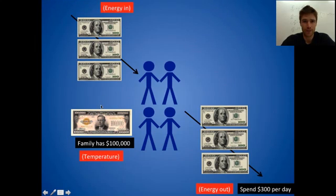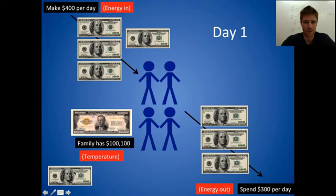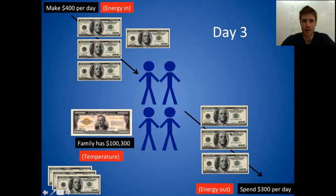There are a couple ways to change the family's wealth. You could increase the amount of money coming in. Let's say now that they're making four hundred dollars a day and they're still spending only three hundred dollars a day. What happens after the days progress? After one day, the family has accumulated an extra one hundred dollars. After two days, two hundred dollars. After three days, three hundred dollars. So you can increase temperature by increasing energy in and keeping energy out constant.